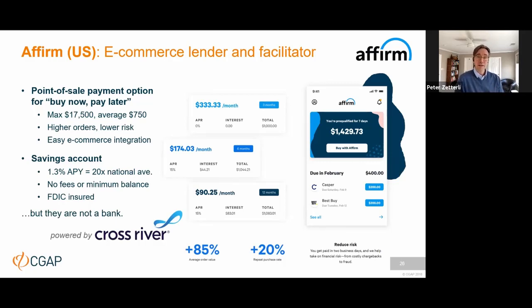Affirm is one of the biggest fintechs here in the United States — they're an e-commerce lender that also offers a very competitive savings account. Again, they are not a bank. The lending, the savings account — none of it is on Affirm's balance sheet, it's all on the balance sheet of Cross River. But the BaaS model is really much more transformative than just powering fintechs — let's hear from Solaris Bank to illustrate why.